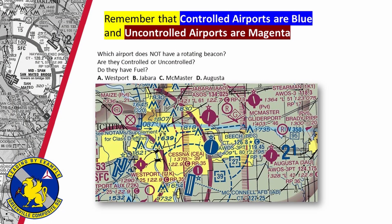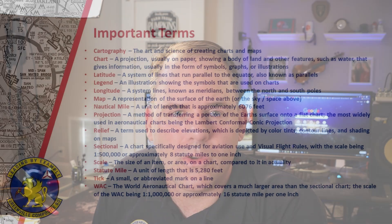For a little practice, take a look at this piece of a sectional — specifically the following four airports: Westport, Jabara, McMaster, and Augusta. Are these airports controlled or uncontrolled? How do you know? Which one of these four airports does not have a rotating beacon? And do they have fuel at the airport? Feel free to pause the video and see if you can answer those questions, especially if you're studying for the CAP Aerospace Dimensions module.